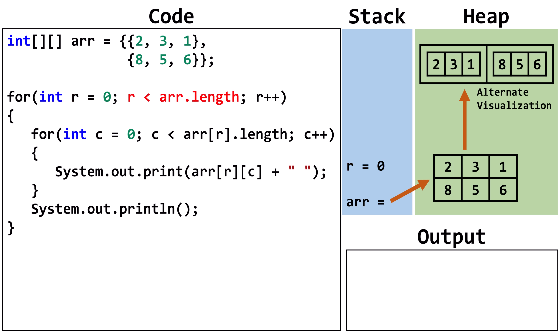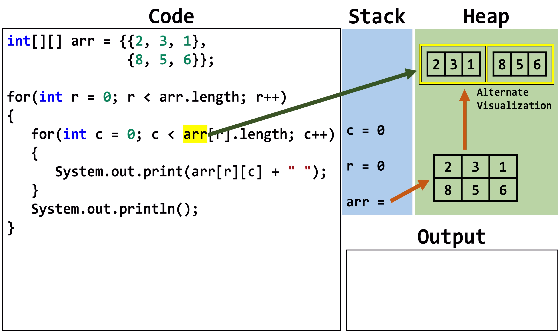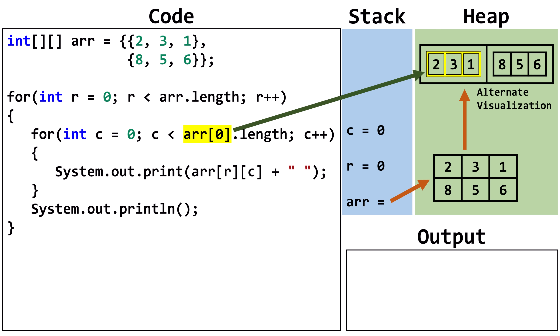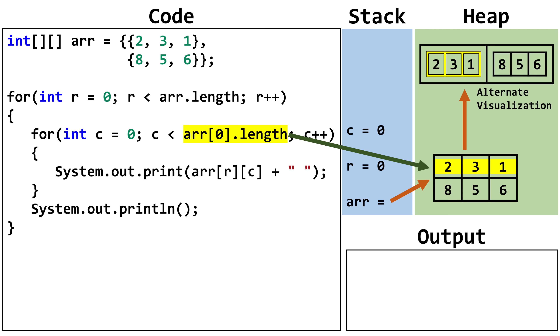We set r to 0. We'll continue the outer loop as long as r is less than arr.length. When we take the length of a 2D array, we are counting the number of elements in the outer array. Using the traditional visualization, we are counting the number of rows. For our current array, we can think of this expression as r is less than 2. r is 0, so this evaluates to true. Now we set c to 0. We check if c is less than arr[r].length. Arr points to the outer 1D array. Arr[r] means we are pointing at the element at index r. In this case, r is 0, so we are pointing at an inner array at index 0 of the outer array. We take the length of the inner array, which is 3. We can think of this as taking the length of row 0 of the 2D array. For our current array, we can think of this expression as c is less than 3. c is 0, so it evaluates to true.